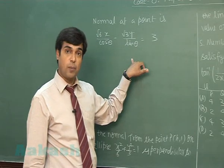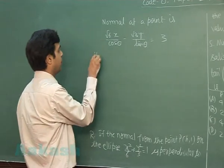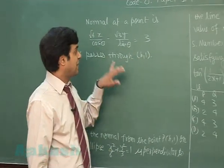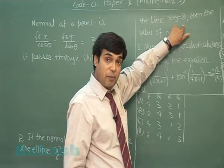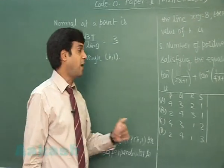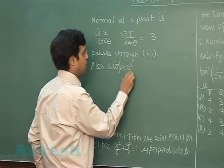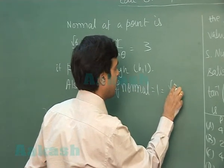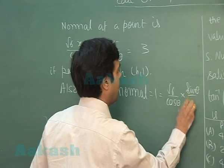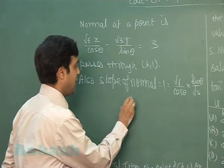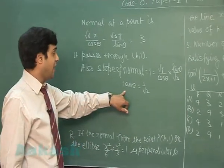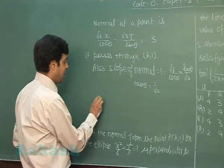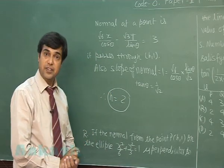The slope of the normal is obtained from the line x + y = 8. Since the normal is perpendicular to this line, its slope is 1 (negative reciprocal of −1). From the normal equation, slope = (√6/cosθ)·(sinθ/√3) = √2·tanθ. Setting this equal to 1 gives tanθ = 1/√2. Substituting sinθ and cosθ into the normal equation and passing through (h, 1), on simplifying we get h = 2.